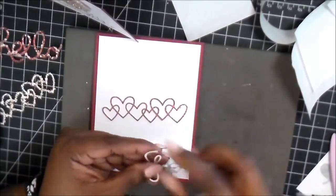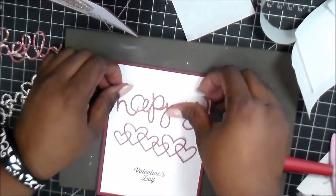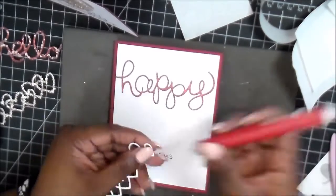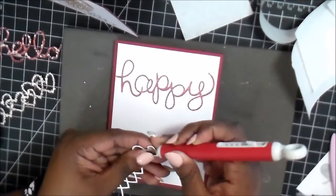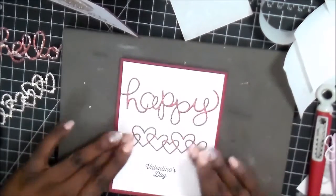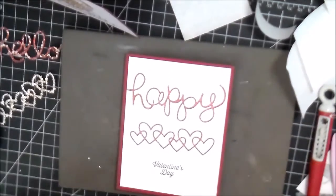So I decided that I wanted to use the 'happy', which I took the backing off so that it'll stick to the front of the card. And I'm doing the same thing with the red hearts. And then before I came back, I just stamped in black Versafine ink—not Versamark—Valentine's Day. So it says Happy Valentine's Day.